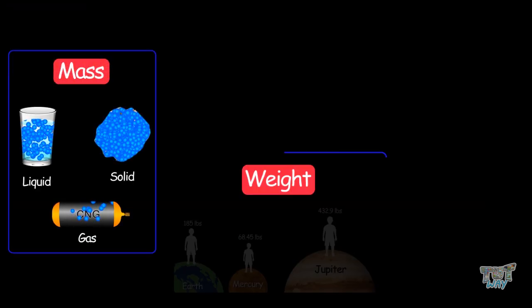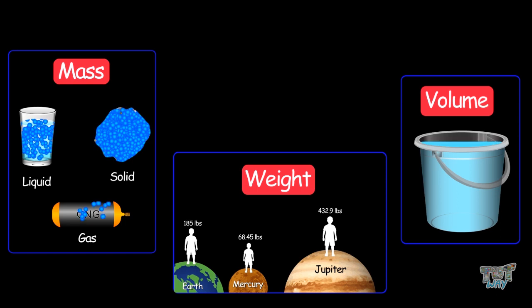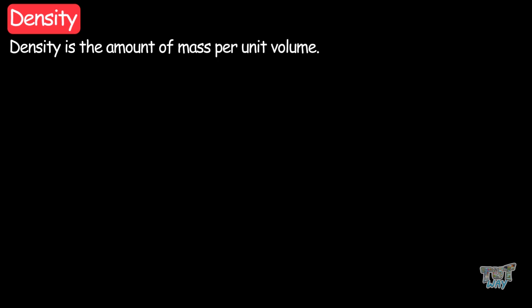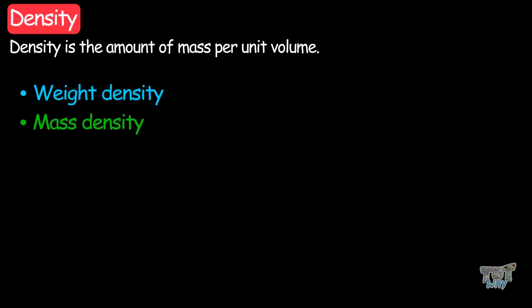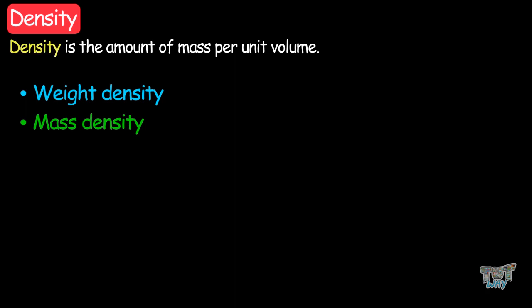Now we have learned about mass, weight, and volume. It's time to learn about density. Density is the amount of mass per unit volume. There are two types of density: weight density and mass density, but we will be commonly using mass density.